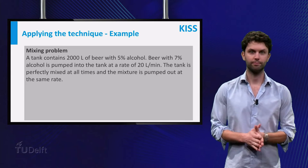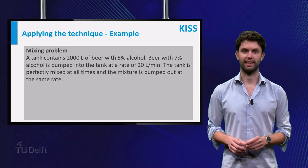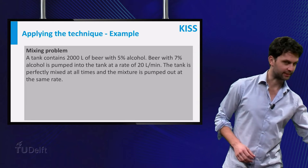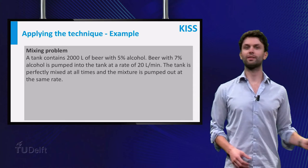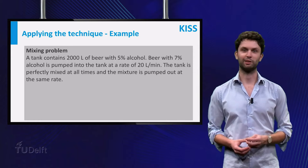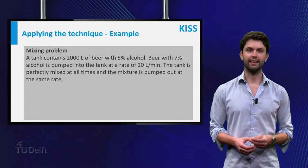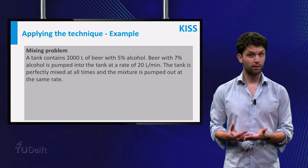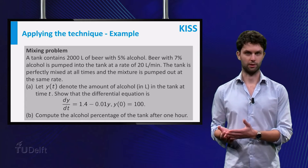Consider the following problem. You have a 2000 liter tank containing beer with 5% alcohol. That's a lot of these guys. Into the tank, slightly stronger beer of 7% is flowing in at a rate of 20 liters per minute. The tank is always perfectly mixed, and the mixture is flowing out at the same rate. These are the two questions.